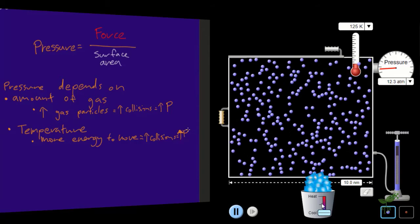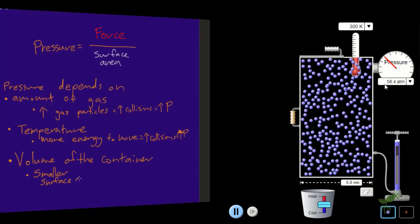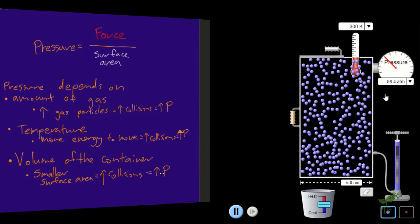The third one is the volume of the container. So the smaller the surface area is, the more collisions will happen, as there's less free space for the particles to move around in. Because of this, there are more collisions, and therefore, more pressure.